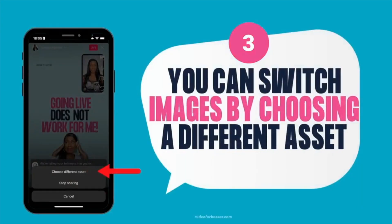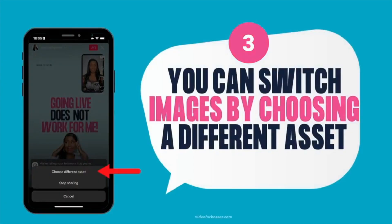Once you have selected an image, you can switch those images by choosing a different asset. You can go live with just one image, but if you want to present different images or different videos to make the live stream more dynamic, it's very easy to switch from one to the other. All you need to do is select the option 'choose different asset' and it will take you to the next visual you want to share.